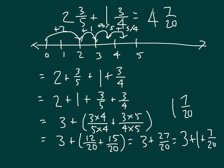4 and 7/20 is in simplest form. So as I had suggested by my number line, yes, the answer was in between 4 and 5.